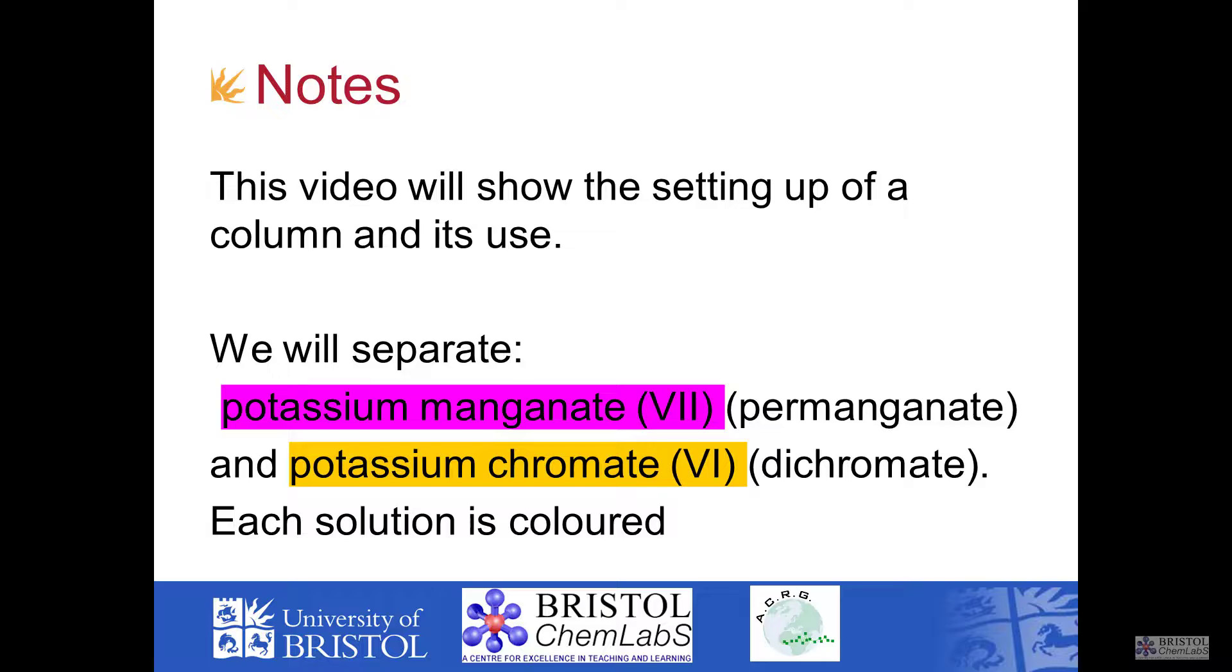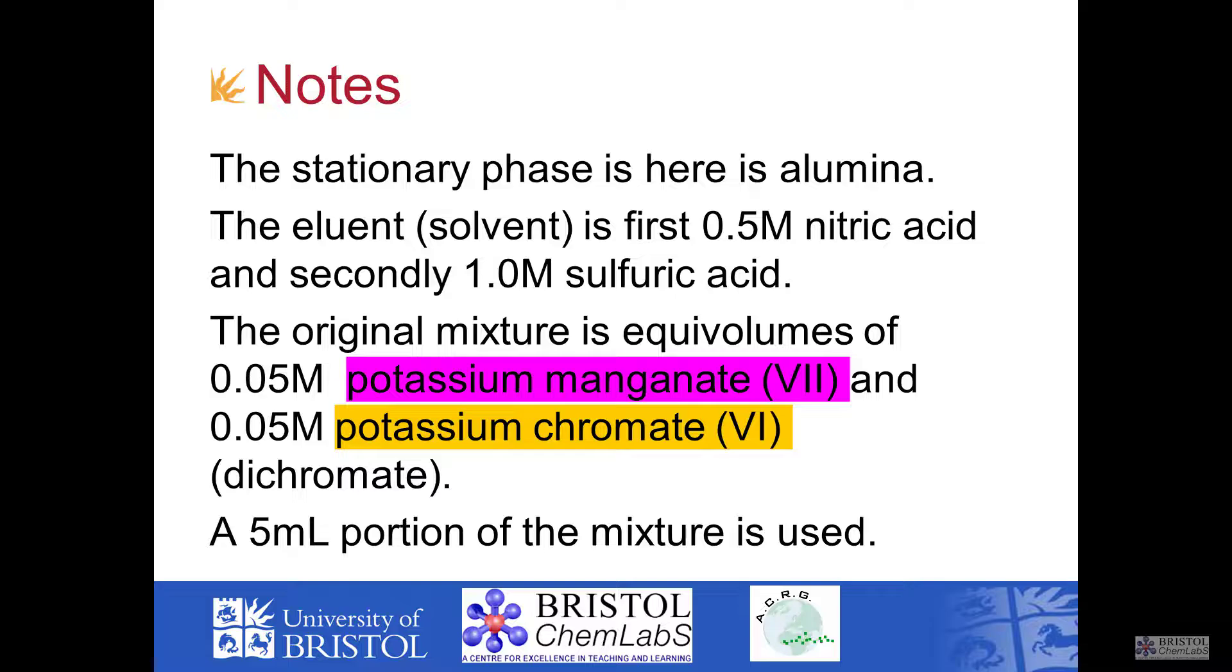We're going to be separating potassium manganate 7, or potassium permanganate as it used to be called, and potassium chromate 6, potassium dichromate. The beauty of these solutions is that each is highly colored.